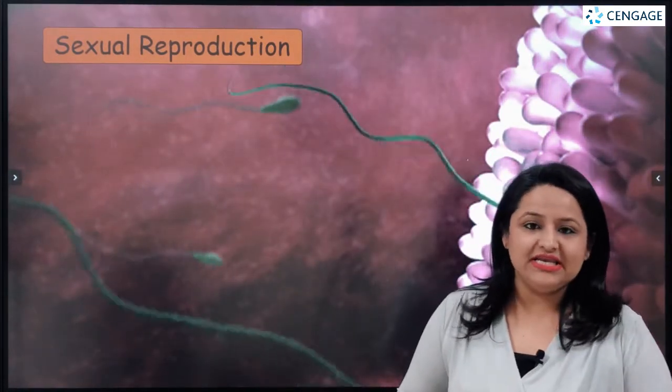In the previous videos we discussed what exactly reproduction is, and we saw that reproduction has two types: asexual, generally involving only a single parent, and sexual, which is majorly bi-parental. Now in this video we are going to talk about sexual reproduction in detail.